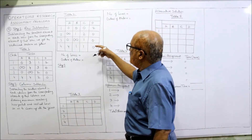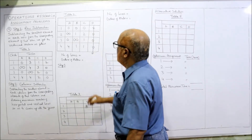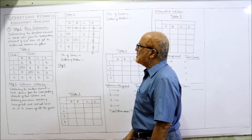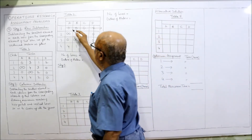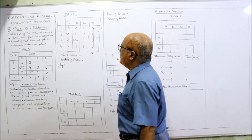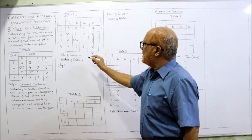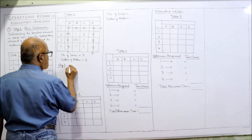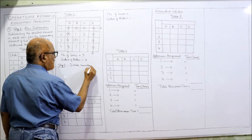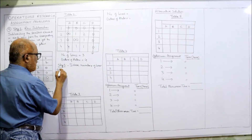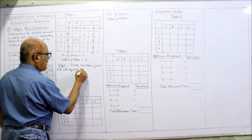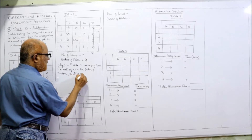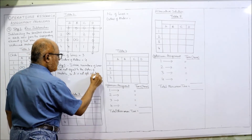Now we draw the minimum number of lines. In one line we can cover all three zeros in a column, and in a row we can also cover three zeros in one line. Only one zero is left, so we draw a vertical line. All zeros are covered by three lines, but the order of the matrix is four. Since the number of lines (3) is not equal to the order of the matrix (4), it is not an optimum solution.